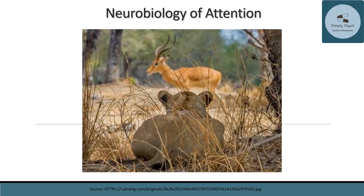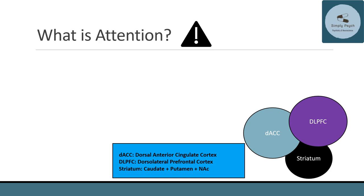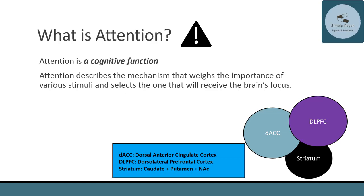We're going to start with the neurobiology of attention. Attention is a cognitive function, and cognition can be conceptualized as an individual's ability to: one, attend to external or internal stimuli; two, identify the significance of those stimuli; and three, respond appropriately. Attention describes the mechanism that weighs the importance of various stimuli and selects the one that will receive the brain's focus.